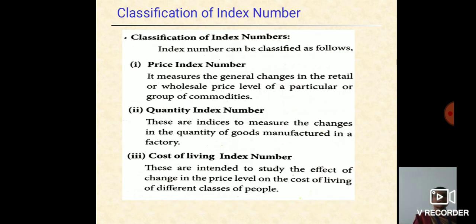Now, we see the classification of index numbers. The classification of index numbers are three types. First one, price index numbers. Second one is quantity index number. Third one is the cost of living index number. The price index number measures the general changes in the retail or wholesale price level of the particular group of commodities. The quantity index numbers indicate the measures of changes in quantity of goods manufactured in a factory. The cost of living index number reflects the effect of change in the price level on the cost of living of different classes of people.